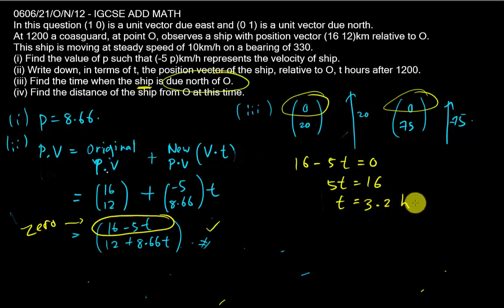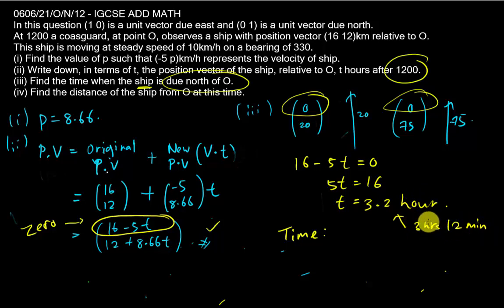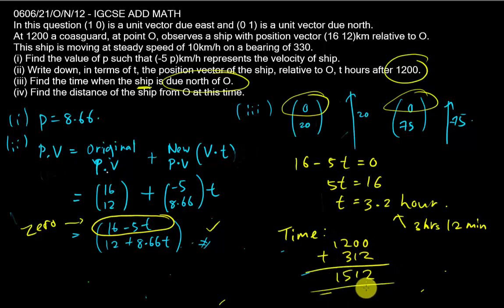Since t = 3.2 hours and the ship departed at 12 pm, you need to convert 3.2 hours to hours and minutes. Take 0.2 × 60 = 12 minutes, so it's 3 hours and 12 minutes after 1200. Adding 0312 to 1200 gives a time of 1512.